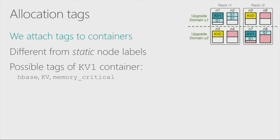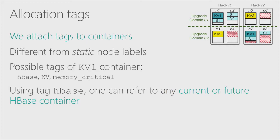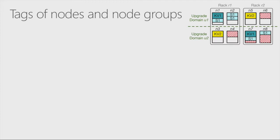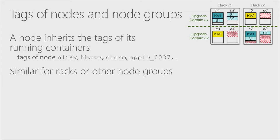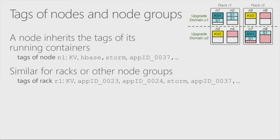In this toy cluster, possible tags for a KV1 container can be: HBase container, key-value store container, and memory-critical. Using a tag like HBase, we can refer to any container belonging to HBase, either current or future. Going from allocation tags, we also define tags for nodes and node groups. A node inherits the tags of its running containers at each given moment. For example, the tags of node 1 can include KV, HBase, Storm, as well as application IDs. Similarly, for racks, we have all tags of containers running in that rack.